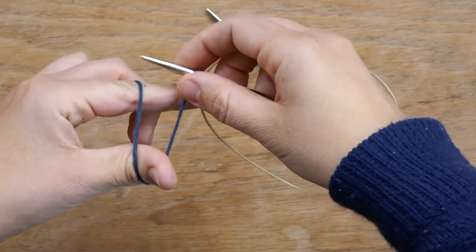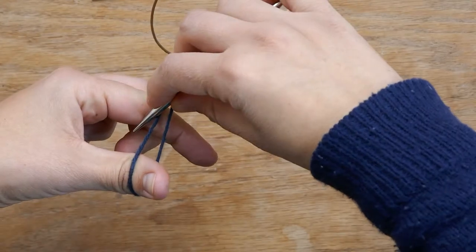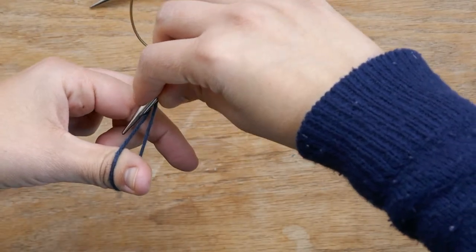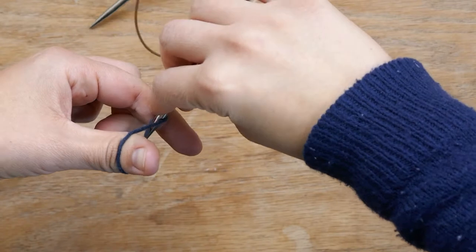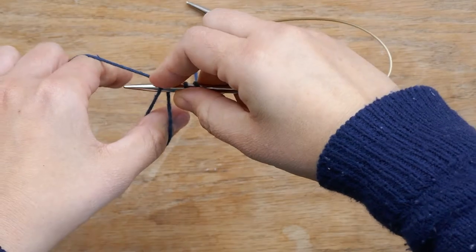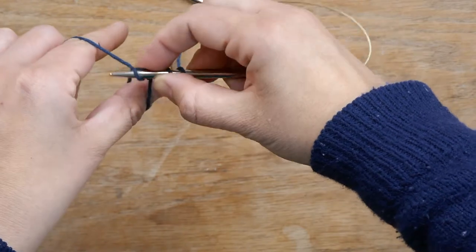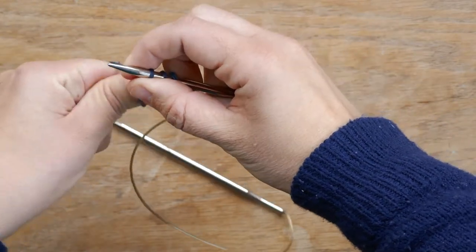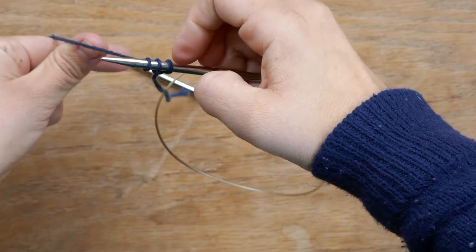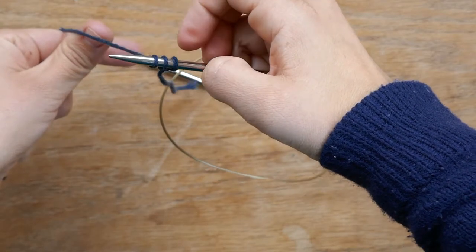Once again, you're going to go around the back of the yarn farthest from you, go under, grab the front, twist your thumb so it makes a loop. Grab the yarn that's over your forefinger, pull it through the loop you just made, and pull it tight. So you can see I've got three stitches cast on.